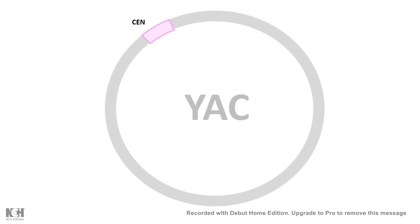YAC has a centromeric sequence which is essential for it to propagate inside the yeast. It has a yeast origin of replication and also an origin of replication in bacteria. You must be wondering why it has an ori for bacteria — it's because most of the time the YAC is designed to work like a shuttle vector. It can shuttle between yeast and bacteria, so that's why it has a bacterial origin of replication as well.